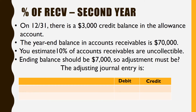Let's say we have a $3,000 credit balance in the allowance account. Our year-end balance in accounts receivable is $70,000, and I still estimate 10% of my accounts receivable. So 10% of $70,000 means I think $7,000 of those receivables are going to go bad. That means the ending balance in that allowance account really should be $7,000, giving a net accounts receivable of $63,000 — I'm thinking I'll collect $63,000 of that $70,000.